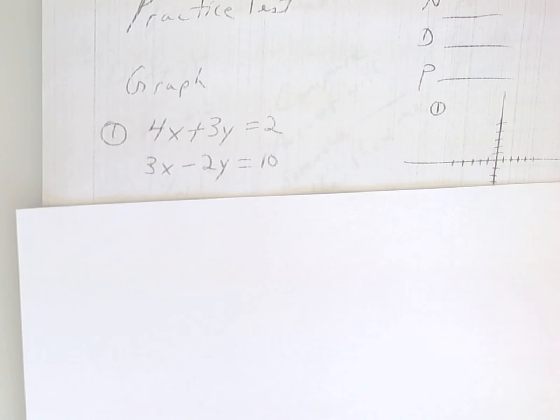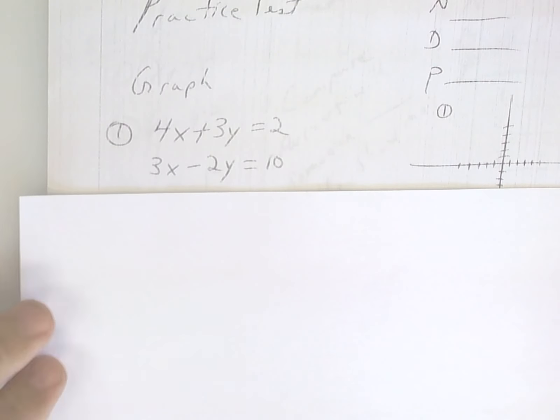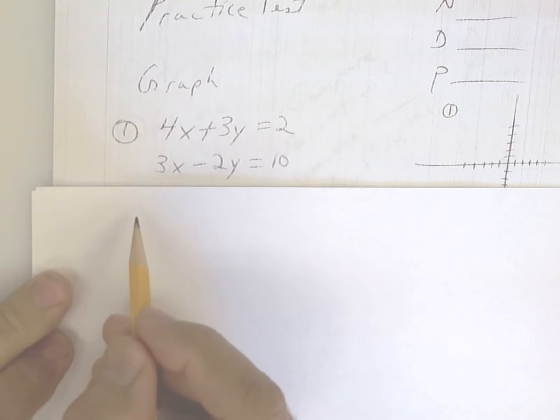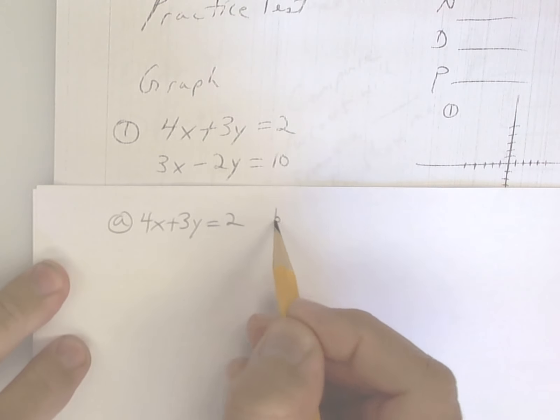All right, this is the practice test for liberal arts. Please rework the ones you need to rework. You have two problems here. You have 4x plus 3y and 3x minus 2y.